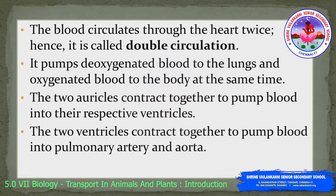The heart is a double pump where the blood circulates through the heart twice; hence it is also called double circulation. It pumps deoxygenated blood to the lungs and oxygenated blood to all other parts of the body at the same time. The two auricles contract together to pump blood into their respective ventricles, and the two ventricles contract together to pump blood into the pulmonary artery and the aorta respectively.